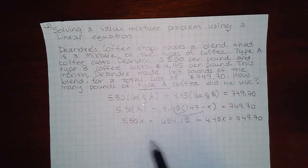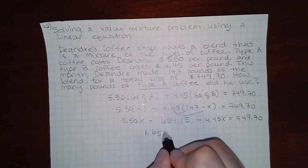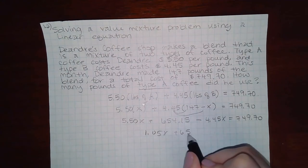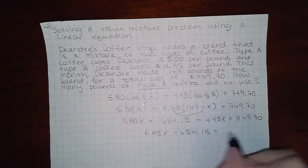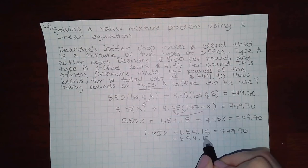And if I combine my like terms, I get 1.05X. And then minus the constant over.